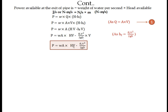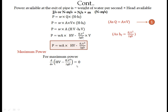Some power is available at the entrance of the pipe, and the power at the exit is what gets transmitted from entrance to exit. Next, we find the condition for maximum power. To maximize P, we differentiate the term [H·V − fLV³/(2gD)] with respect to V and set it equal to zero. Differentiating gives H − 3fLV²/(2gD) = 0, which is the condition for maximum power.